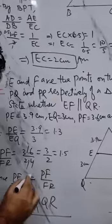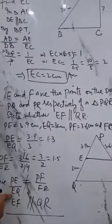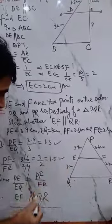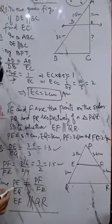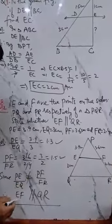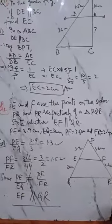So here we see PE upon EQ is not equal to PF upon FR. 1.3 and 1.5, these are not the same. Therefore we can say EF is not parallel to QR.